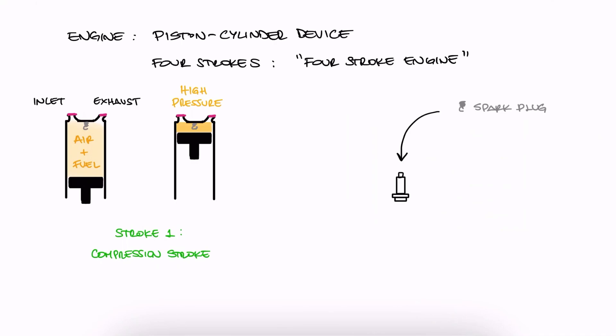This spark plug is an electrical device that receives high voltage electricity to produce a spark between the positive and the negative electrodes. Right before the air-fuel mixture is fully compressed, the spark plug fires, igniting the mixture.